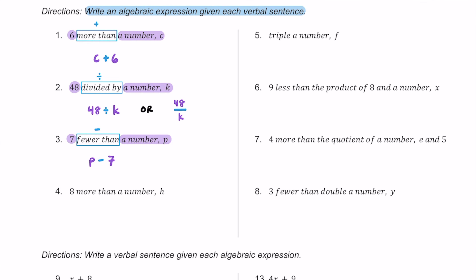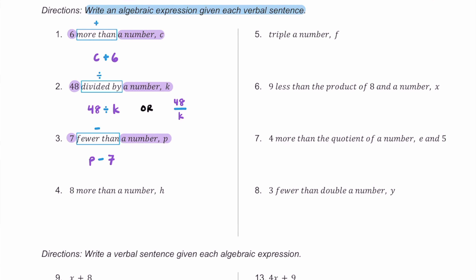For number four, we have eight more than a number h. Eight is one of our terms and h is our second term. The phrase 'more than' means we're going to be adding — either eight plus h or h plus eight. Because it's eight more than h, we add eight afterwards, so the expression is h plus eight.